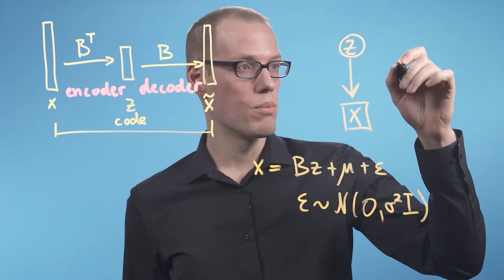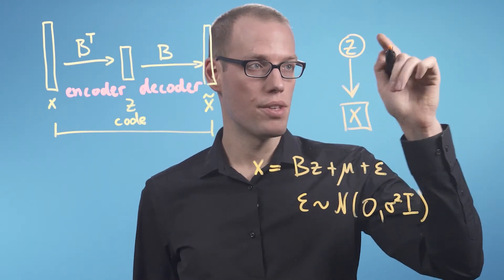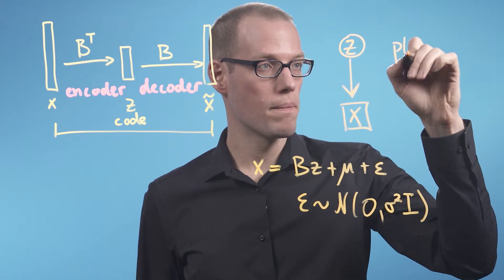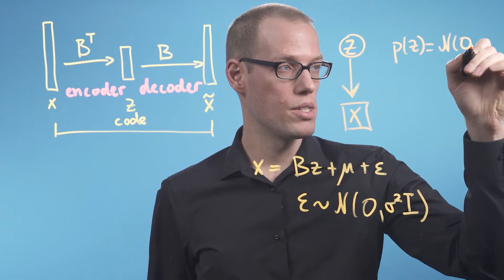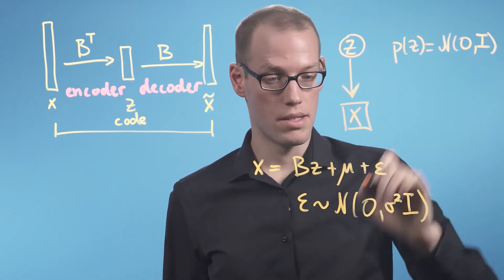We further assume that the distribution of this Z is a standard normal. So P of Z is Gaussian with mean zero and covariance matrix, the identity matrix.